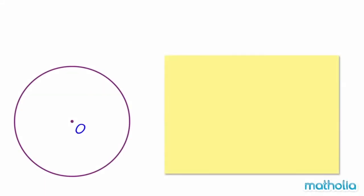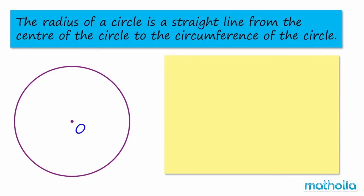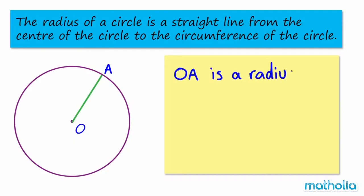Let's draw the radius of the circle. Recall that the radius of a circle is a straight line from the centre of the circle to the circumference of the circle. Starting at point O, we can draw a straight line to the circumference of the circle marked point A. The line OA is a radius of the circle.